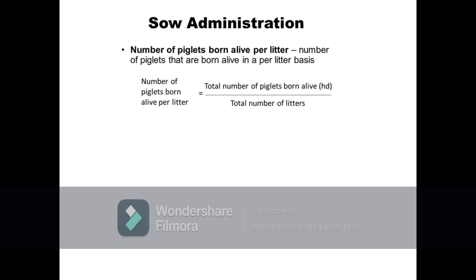Next is the number of piglets born alive per litter, which is the average number of piglets born alive on a per litter basis. It is calculated as total number of piglets born alive divided by the total number of litters or farrowings. For example, if there were 117 piglets born alive from 12 litters, the average number of piglets born alive per litter is equal to 117 divided by 12, equals 9.75 piglets.